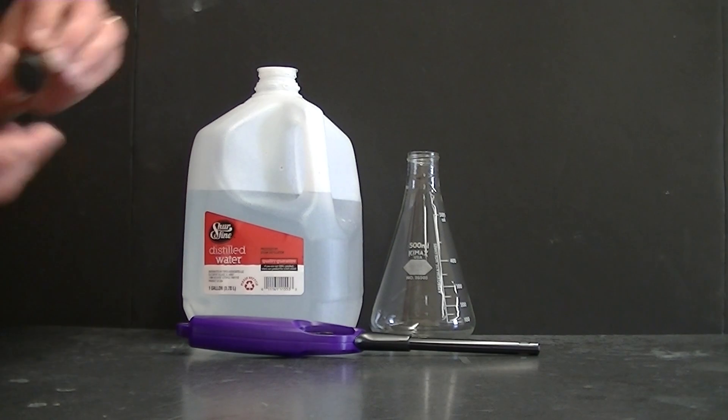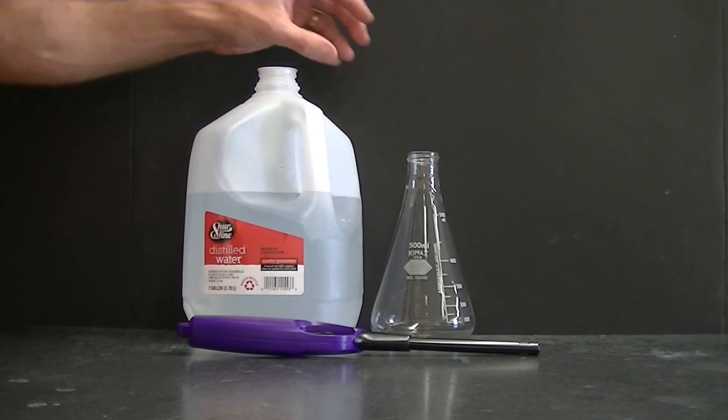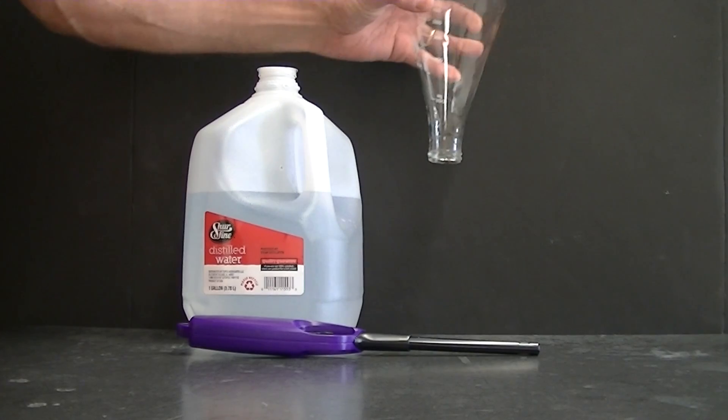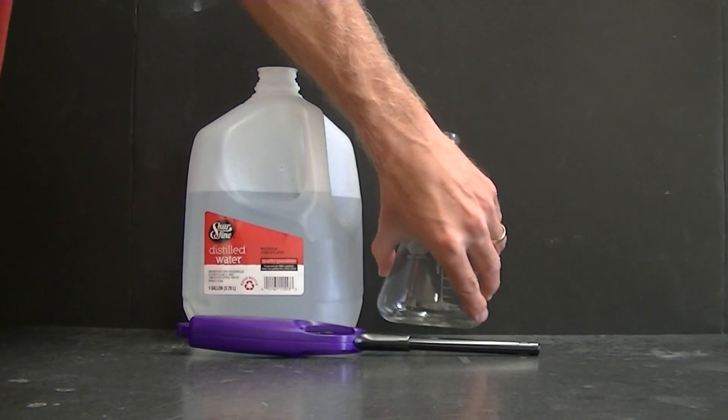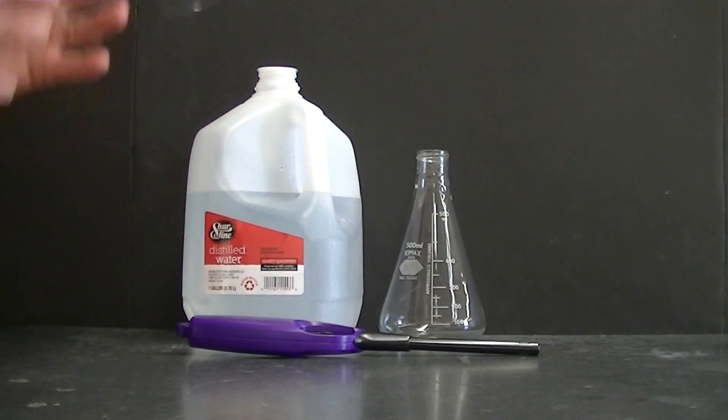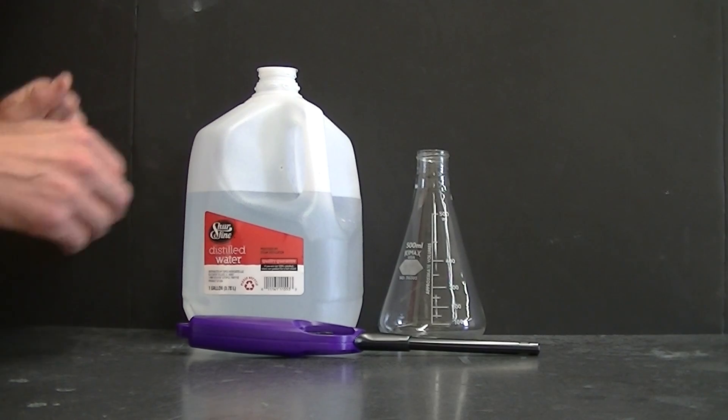And then when it's time to do the experiment, let out the lid, show it to the audience, and turn it upside down. And because the inside of the flask is coated, it's not pooled, and the liquid won't drip out.